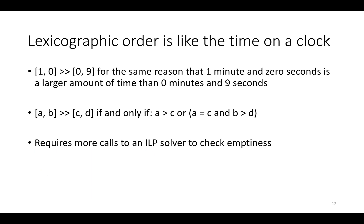And lexicographic order looks kind of weird when you write it in that symbolic form. But actually, it's very familiar. It's basically the ordering you see on clocks. For example, [1, 0] is lexicographically greater than [0, 9], for the same reason that 1 minute and 0 seconds is a larger amount of time than 0 minutes and 9 seconds. And of course, in general, here's just a repeat of that formula we saw on the last page.